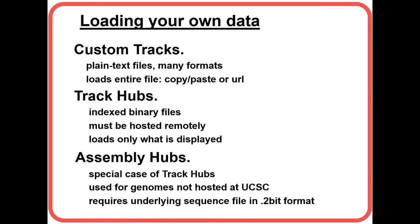Track hubs are more complicated but more flexible, giving access to much larger datasets. They must be loaded via indexed binary files and cannot use some simpler formats unless converted — for example, a BED file to a BigBed file, which is a condensed binary format. They must be hosted remotely via URL unless you have a local copy of the browser downloaded to your desktop, in which case they can be loaded locally.